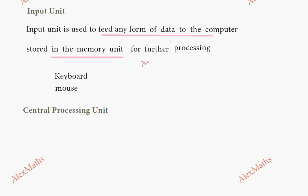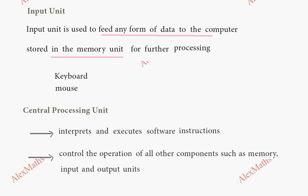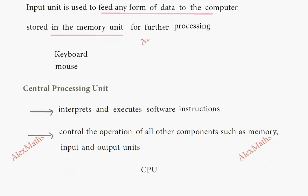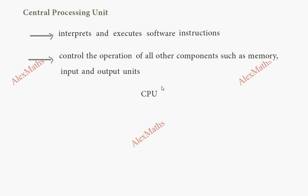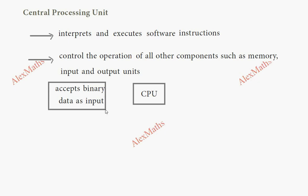The processing unit is the central processing unit. The central processing unit interprets and executes software instructions. The programming runs in the central processing unit. The data is interpreted and executed in the CPU. The CPU processes data in the form of binary, and from there we can decide the output.